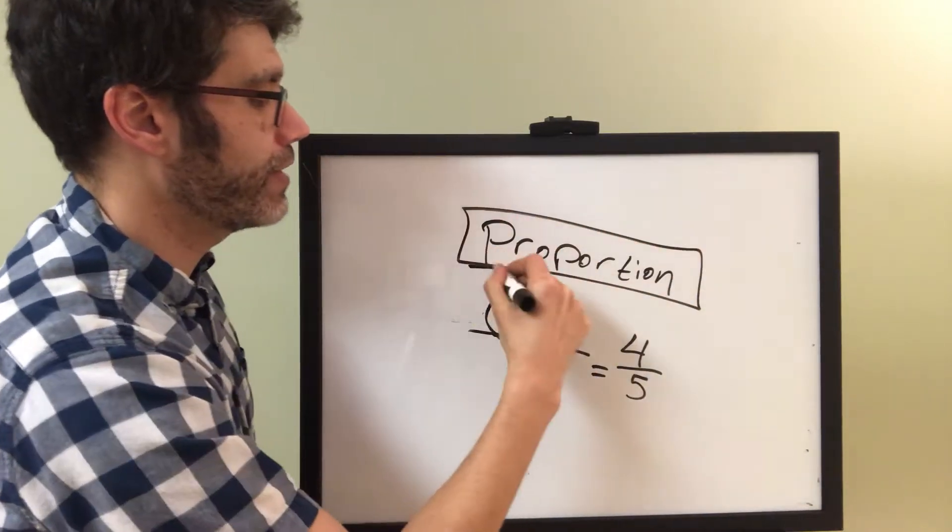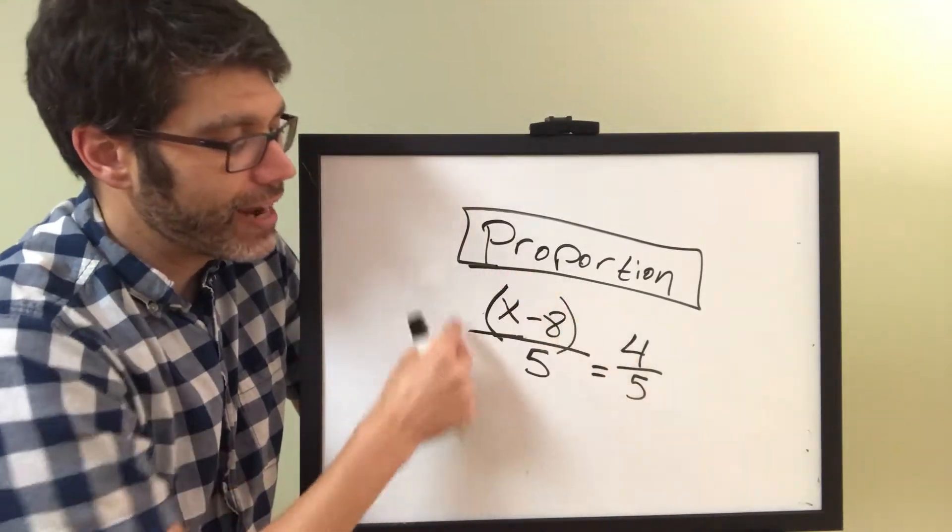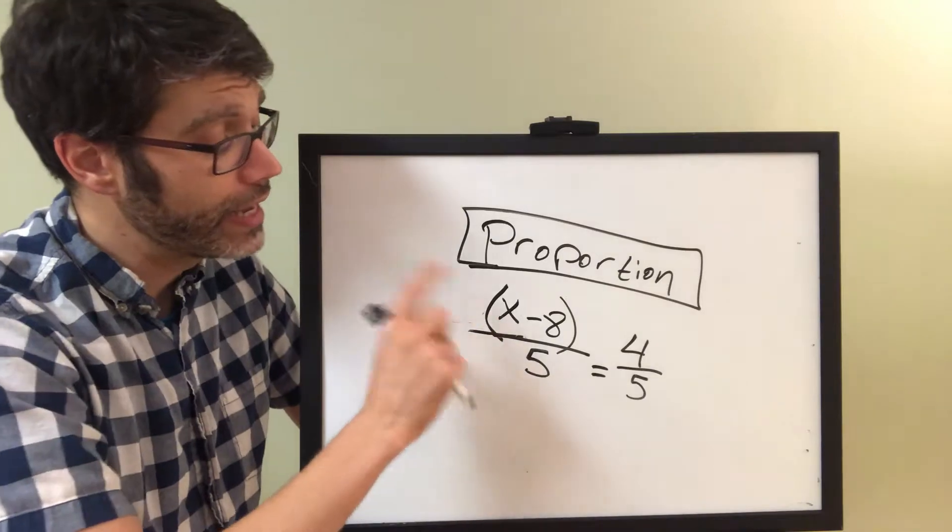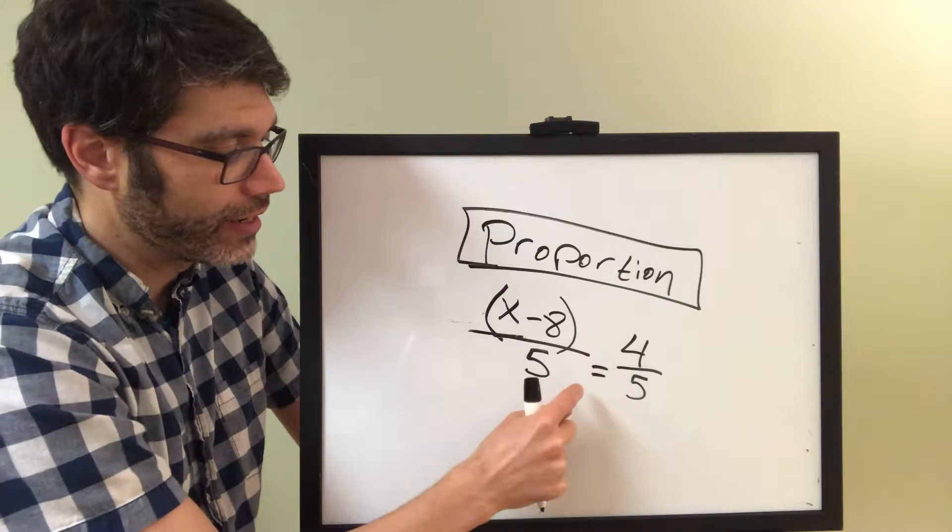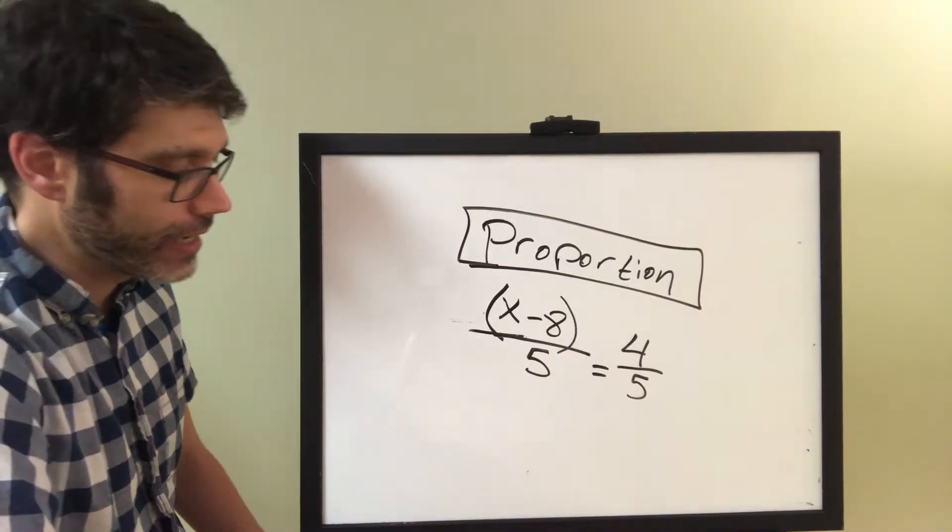So, that's a very specific vocabulary term. It means that this fraction is set equal to this fraction. So, what we're doing here is trying to figure out what this x needs to be so that this fraction is indeed still equal to that fraction on the right-hand side.